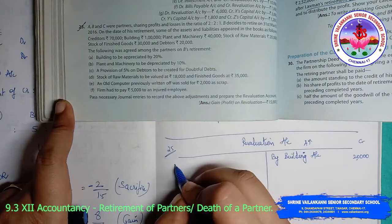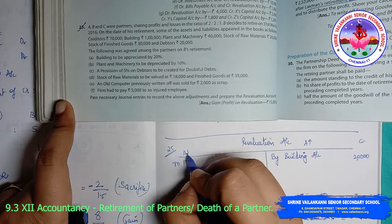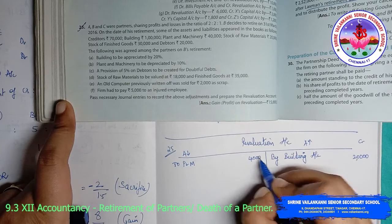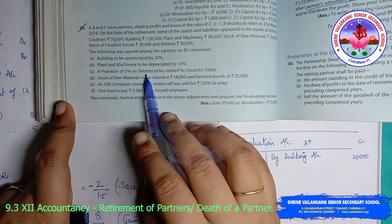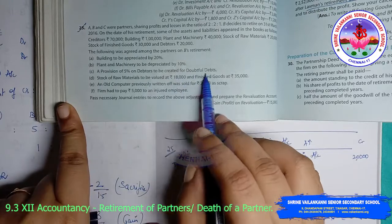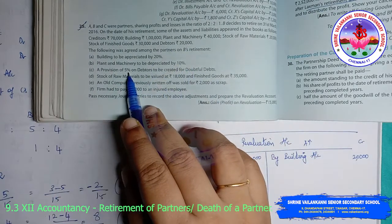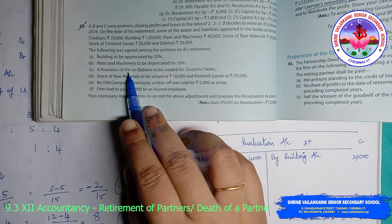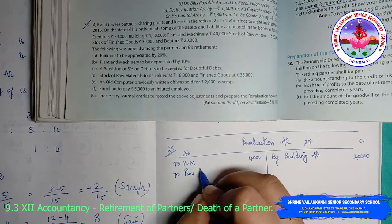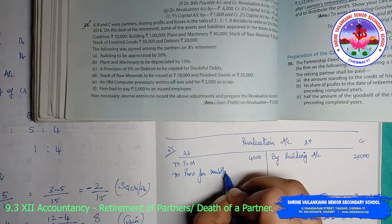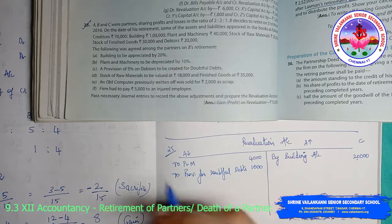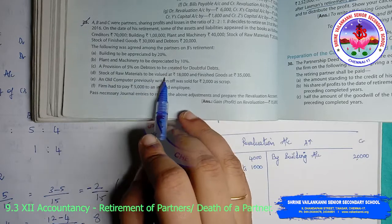Plant and machinery 40,000 depreciated by 10% gives 4,000. Asset is decreasing due to depreciation, so debit plant and machinery 4,000. Then provision of 5% on debtors to be created for doubtful debts — debtors are 20,000, so 5% on that is 1,000. Debit revaluation account and credit provision for doubtful debts 1,000.